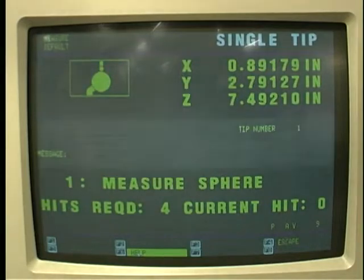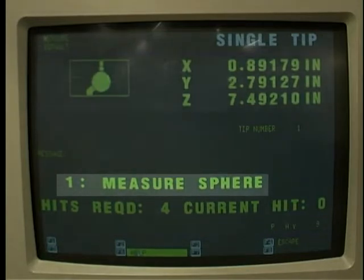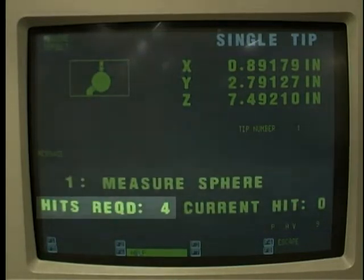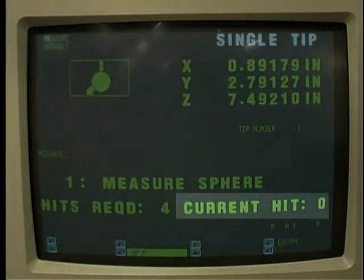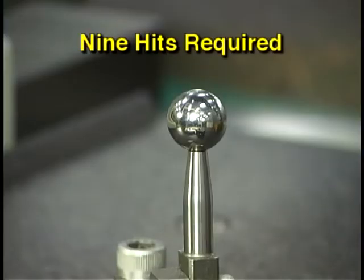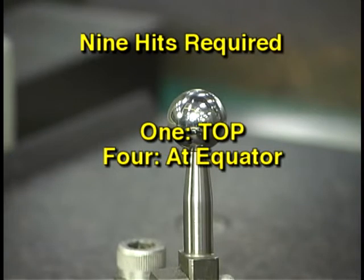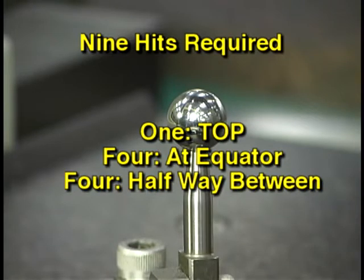The screen displays the procedure for completing the qualification. In step one, the sphere must be measured. To perform this accurately, the software recommends a minimum of four points be measured when checking a sphere. To the right, it indicates that zero current hits have been entered at this time. For this CMM, a minimum of nine points must be read on the qualifying sphere. These points include the top of the sphere, four points around the equator, and four points halfway between the equator and the top.